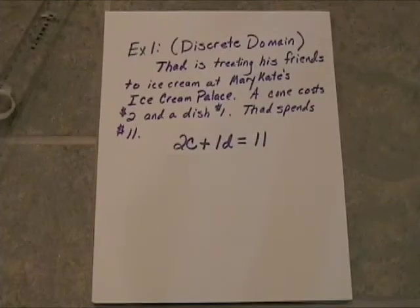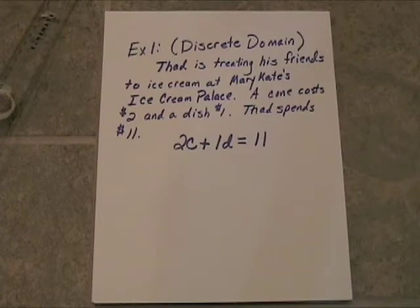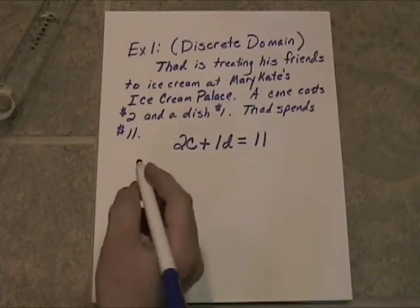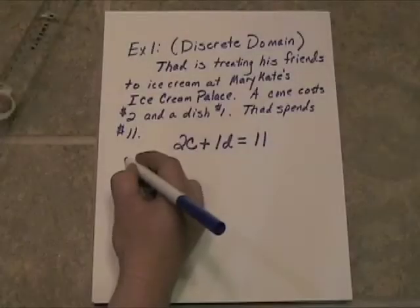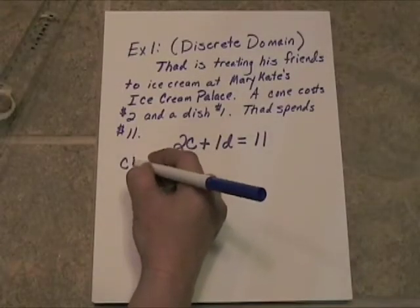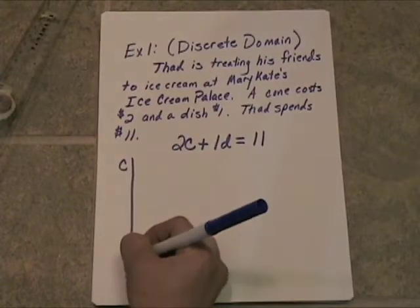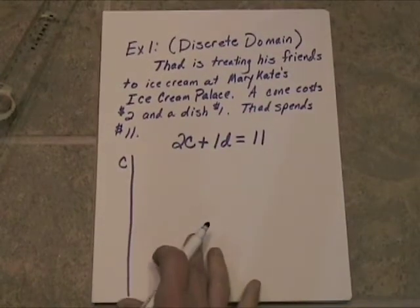Now we want to see a graph of every single possible thing that could happen here. The easiest way to do this is to look at all the different ways this can be done. Let's make a table and compare cones to dishes, because there are only so many ways this can work — he only spent $11.